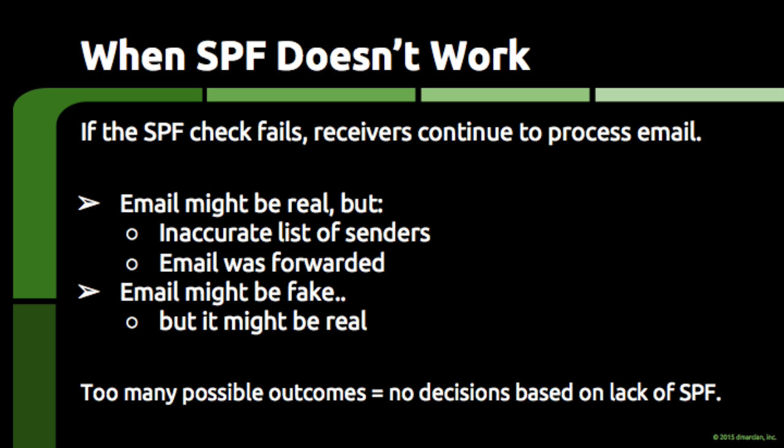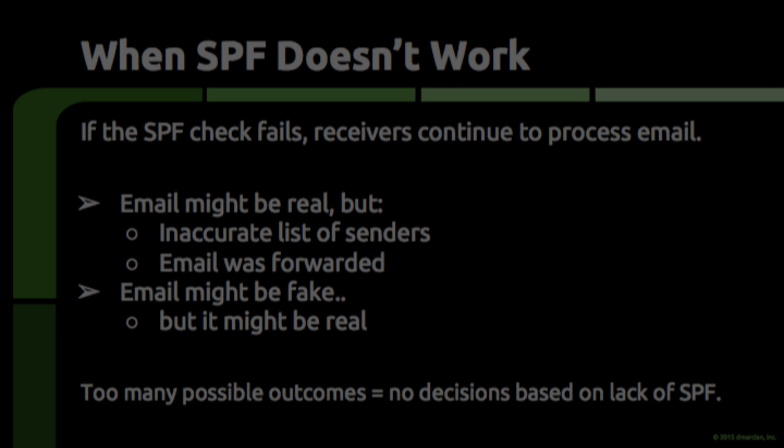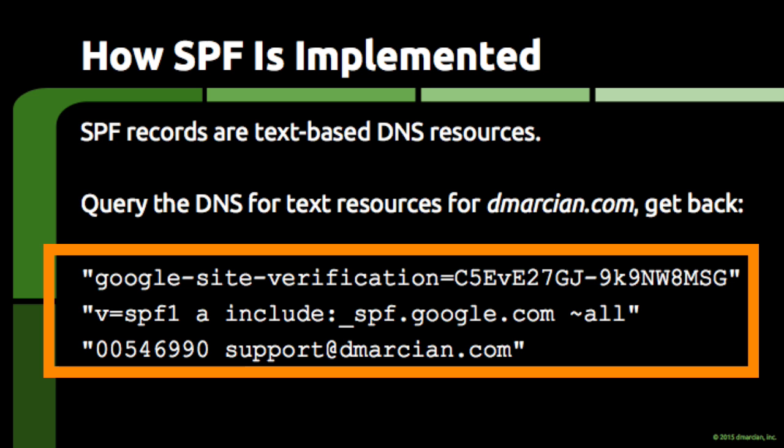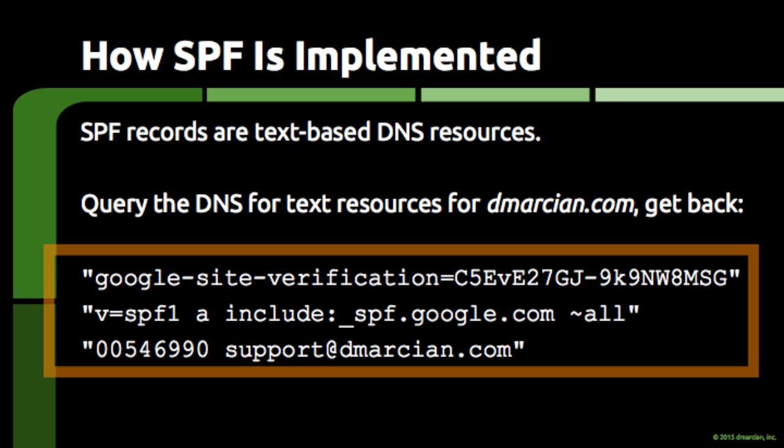SPF is implemented as text-based resources that are published in the Domain Name System. The DNS, as it's universally referred to, is the massively distributed global database where people and computers go when they want answers to questions like, where can I find the servers that are responsible for services like websites and email for dmartian.com? You can query dmartian.com using the DNS and get back answers put in place by the operators of dmartian.com. In the same way, you can use the DNS to get the text resources for dmartian.com, and one of those text resources might be an SPF record.